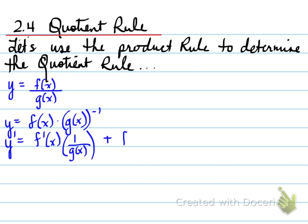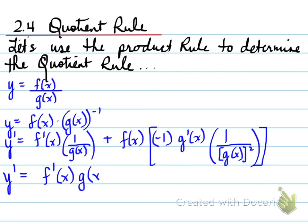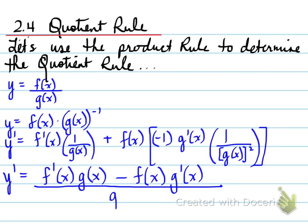To take the derivative, we take the derivative using the product rule, which is the derivative of the first times the second plus the first times the derivative of the second. Once we do that, we can simplify the expression, and it turns out that the quotient rule is as follows.